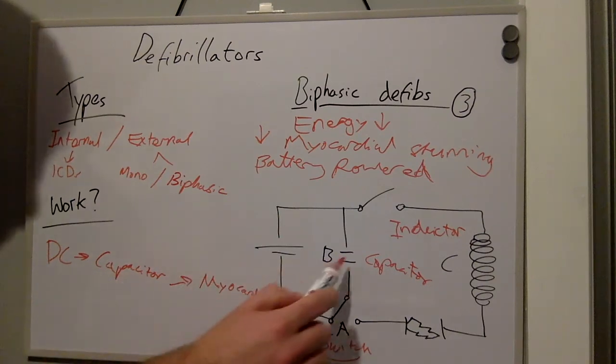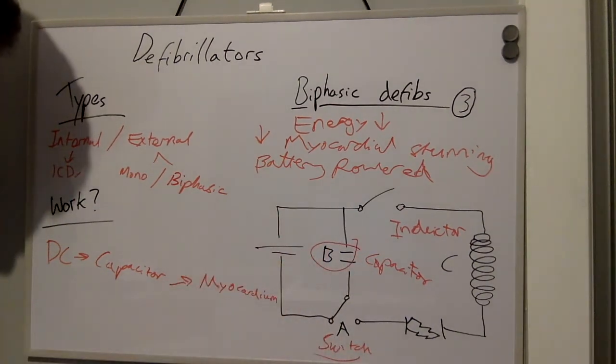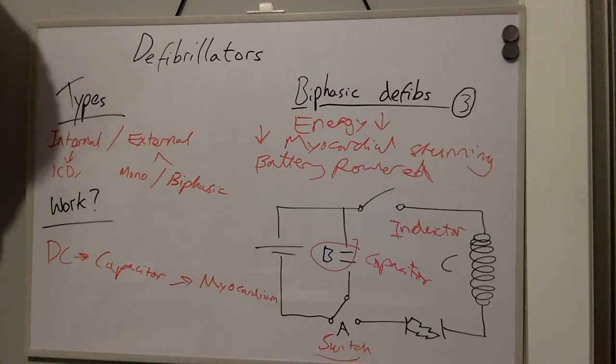The capacitor stores the electrical charge and the inductor causes a back electromotive force to deliberately slow down the discharge rate of the defibrillator.